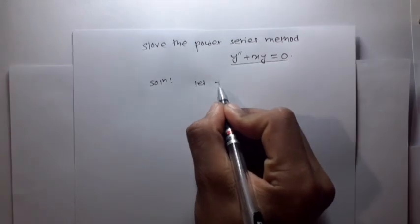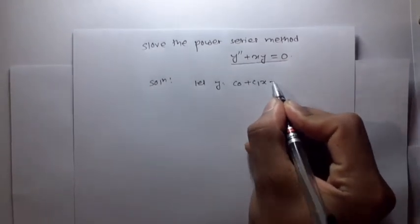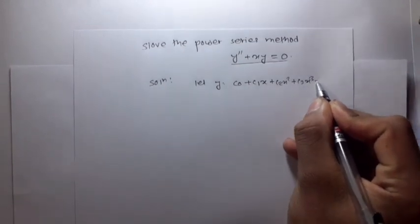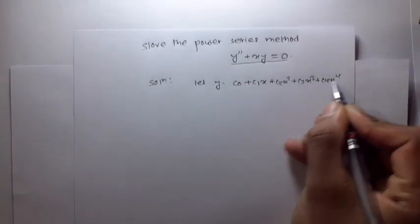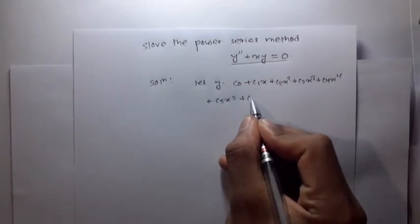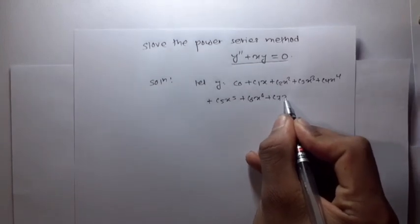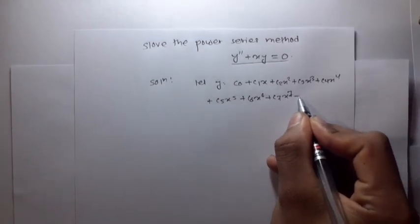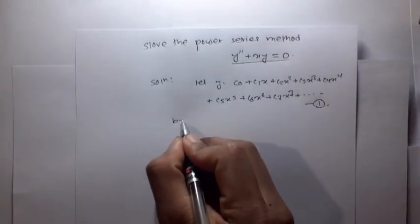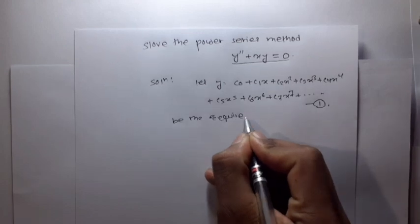Let y be equal to c0 plus c1x plus c2x squared plus c3x cubed plus c4x to the 4th plus c5x to the 5th plus c6x to the 6th plus c7x to the 7th plus dot dot dot. Let this be equation one, the required solution.